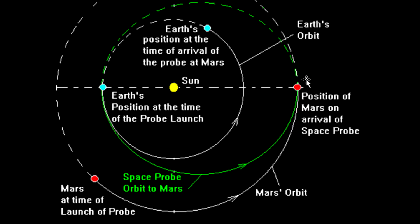For this to occur, it's important for the launch to occur at a specific time, which is called the launch window. This occurs every 26 months when Mars is 44 degrees ahead of Earth in its orbit.